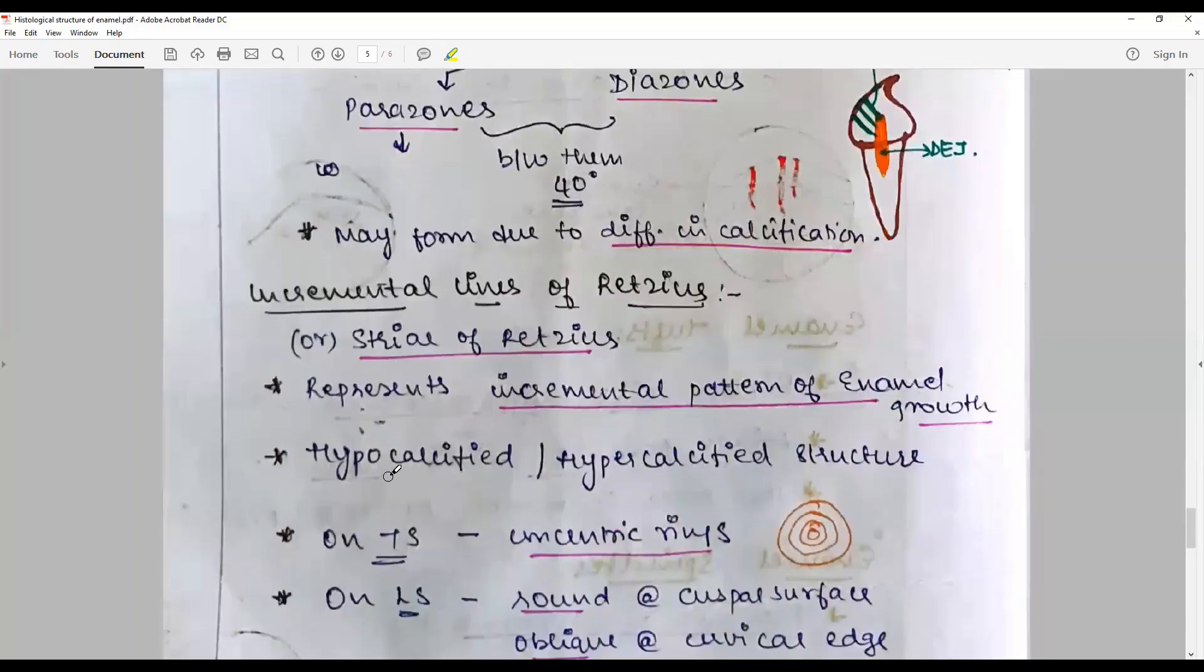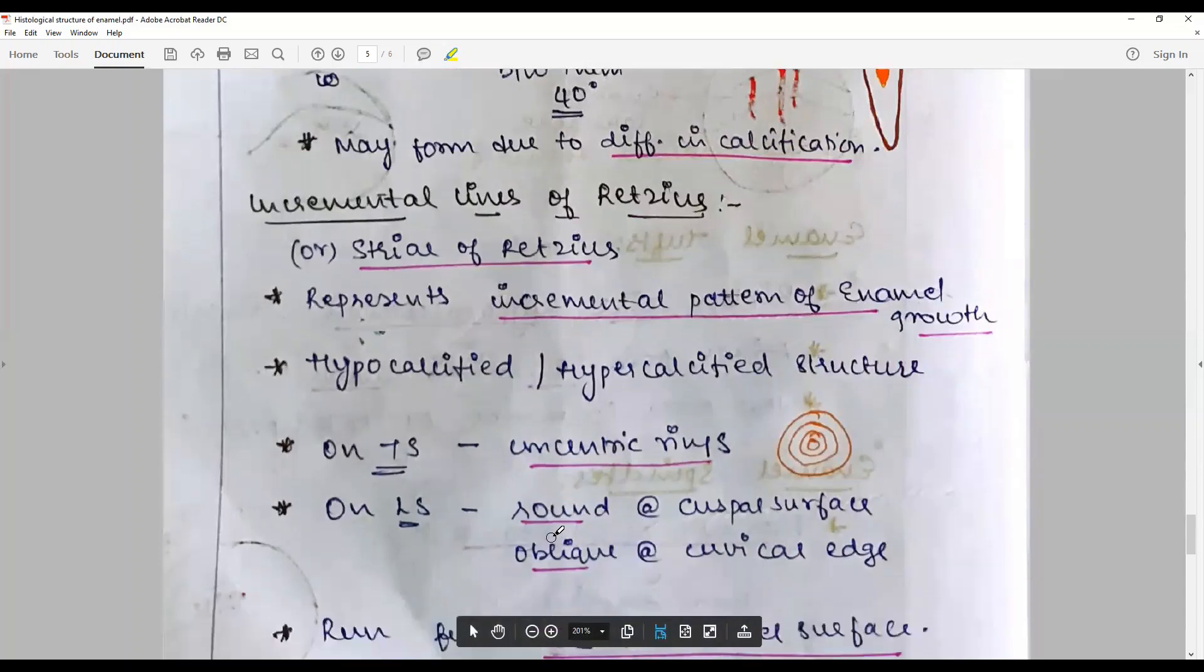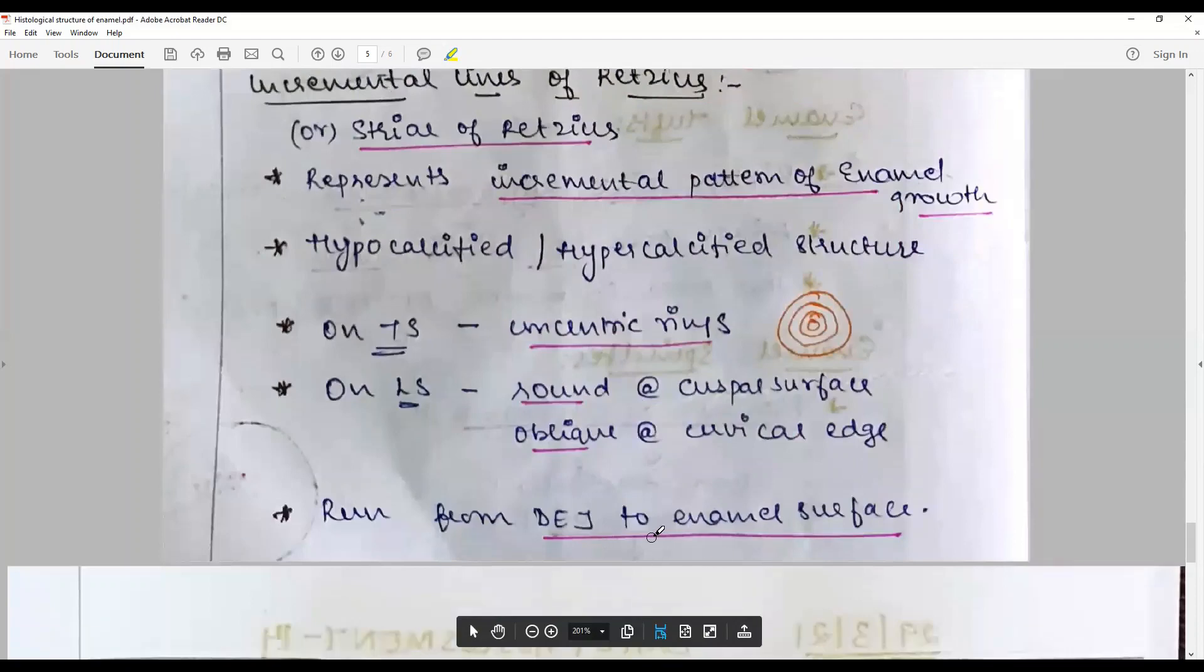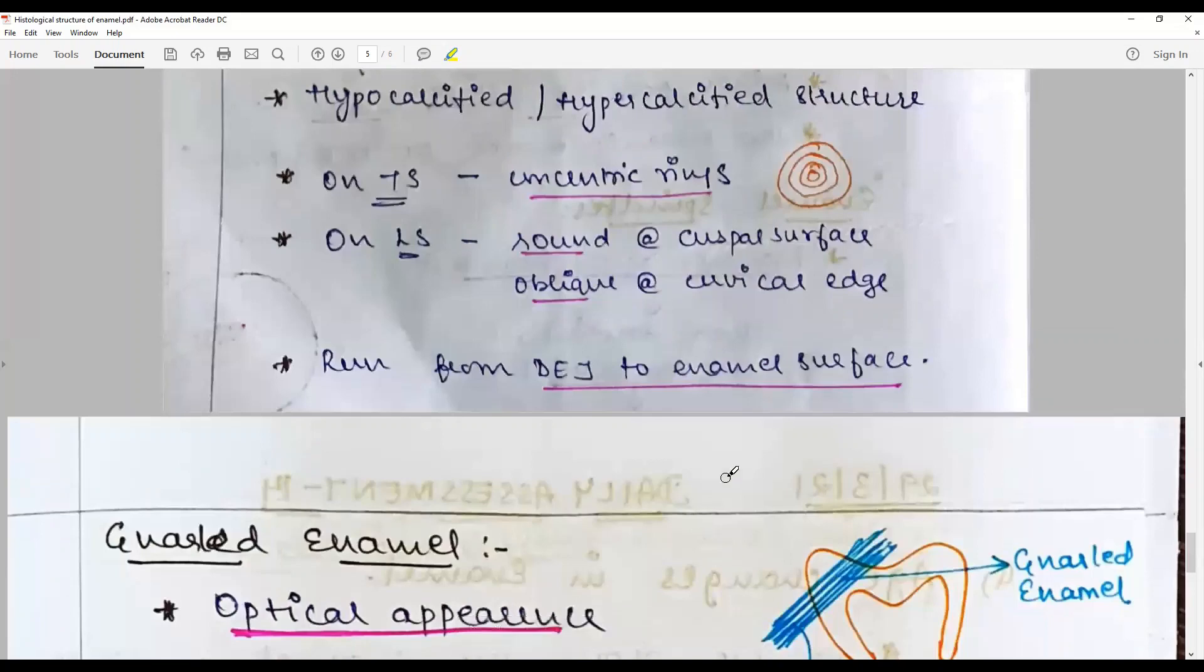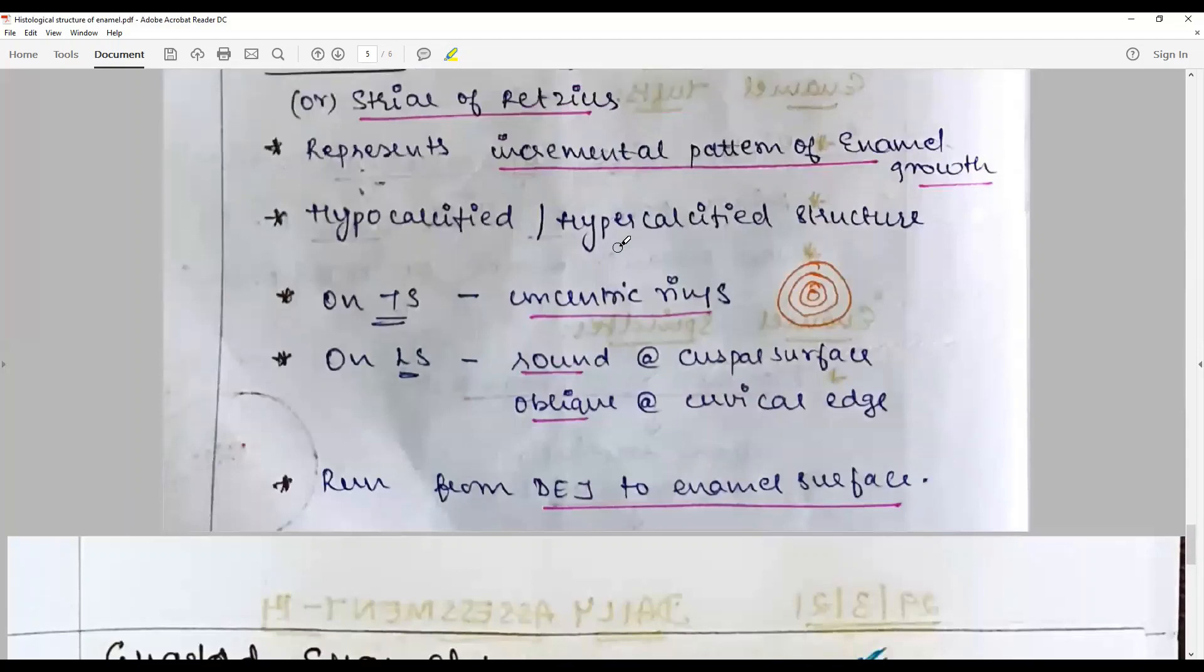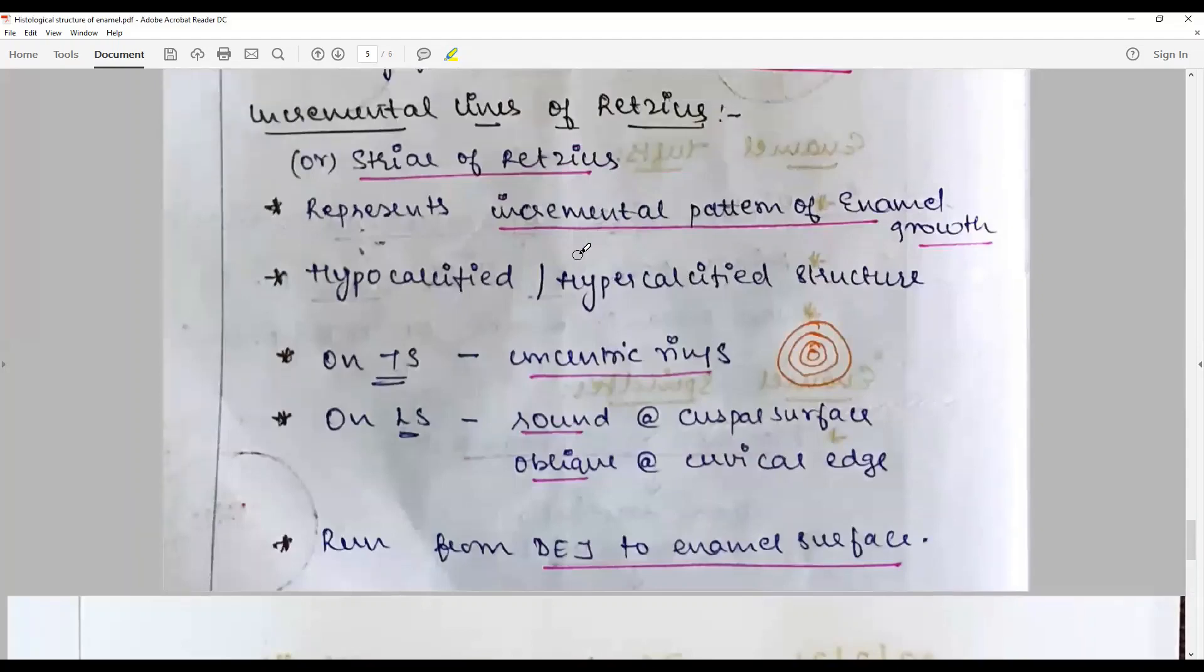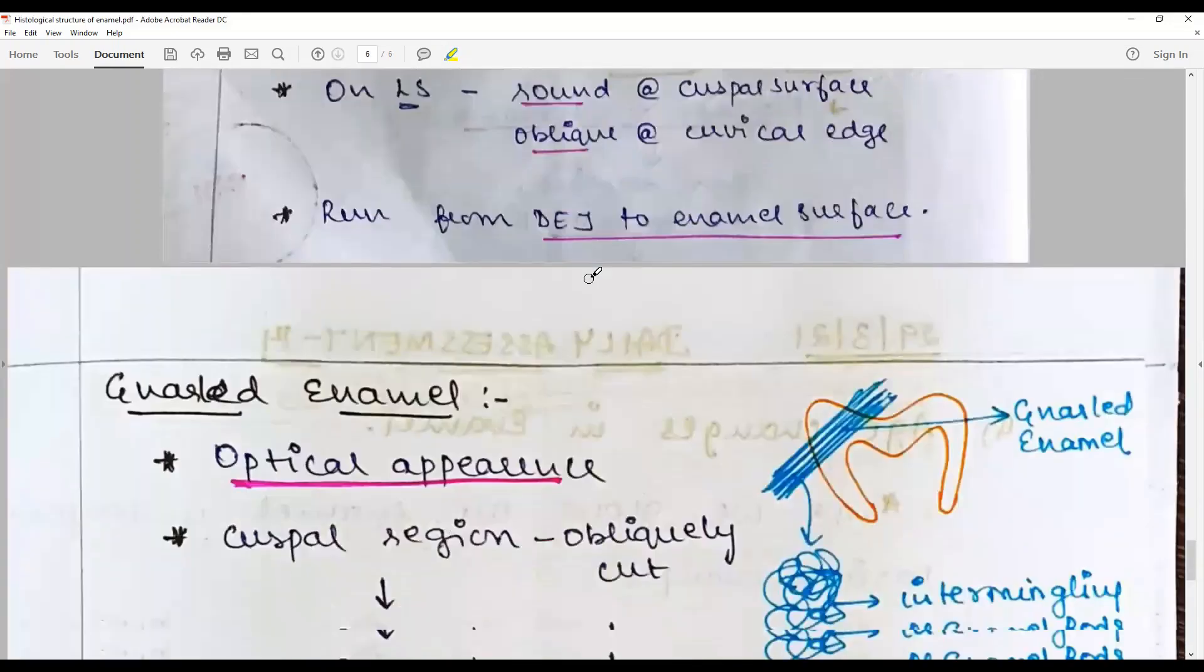Incremental lines of Retzius or striae of Retzius represents the incremental rhythmic deposition pattern, whereas this is due to the difference in amount of calcification and optical phenomenon. On cross-sections they are seen as concentric rings, whereas on longitudinal sections they are seen as round in cuspal surface and oblique in cervical edges. They run from the DEJ to the enamel surface. And like your annular rings, you have here in the dentin we have lines of Von Ebner, incremental lines of Von Ebner, striae, or we have in cementum. So very important incremental lines of Retzius question.